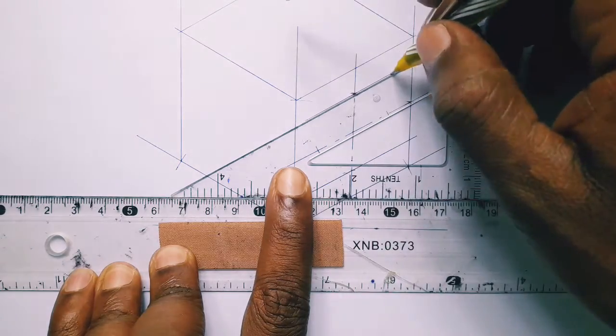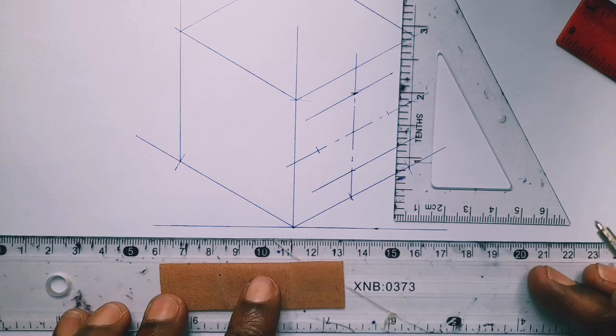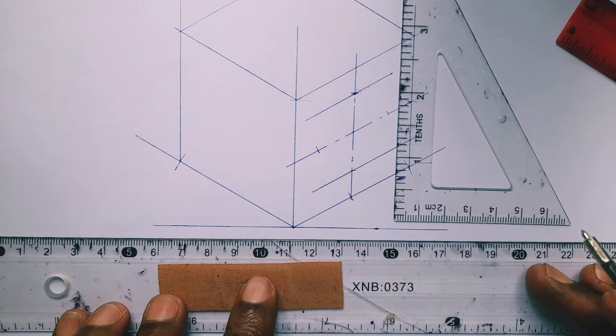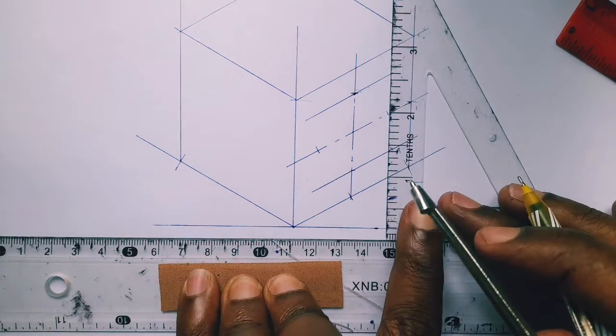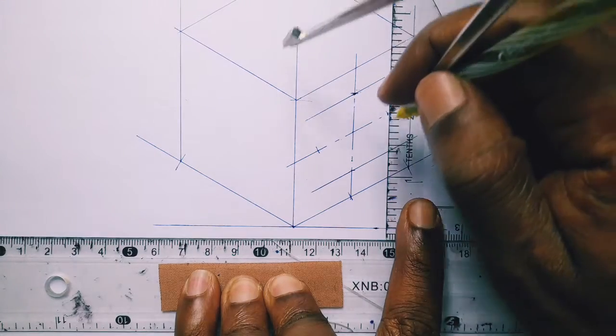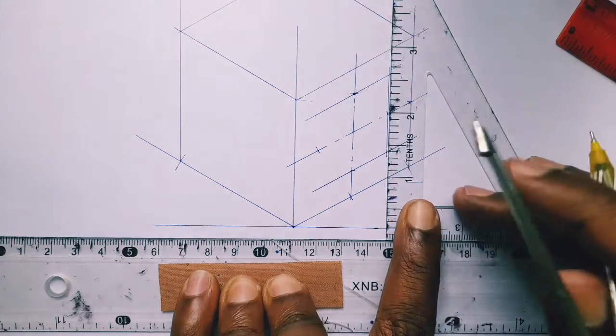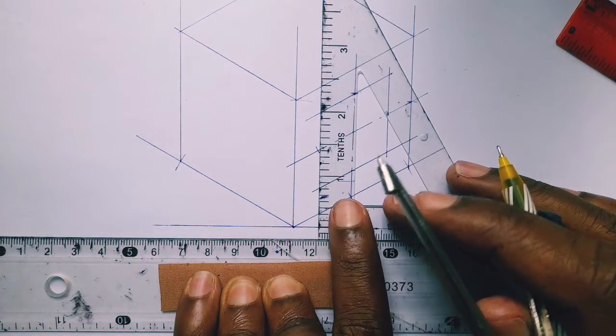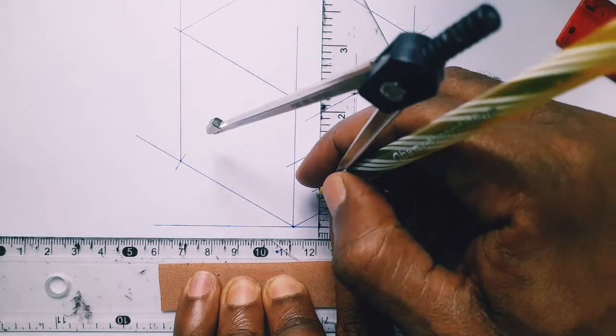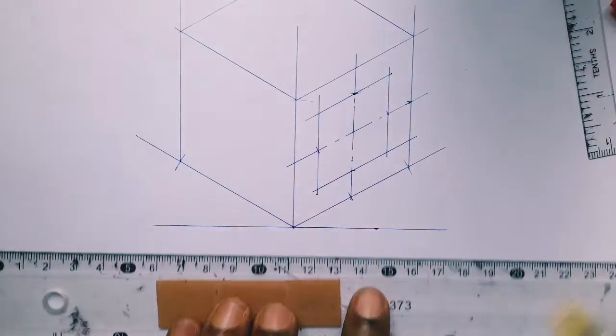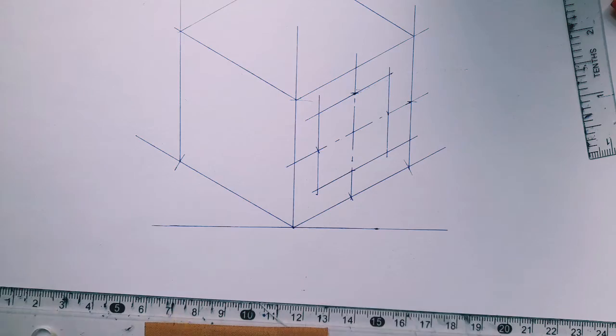And then we draw the vertical lines. These lines again they are parallel to the vertical axis, so use a straight edge vertical edge and we draw them. And it gives us our expected rhombus and in this rhombus we are going to have a circle drawn inside.